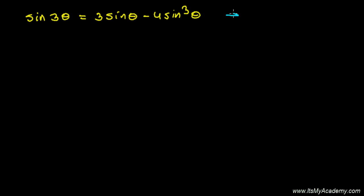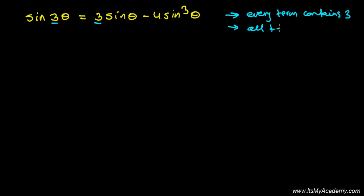A few things to keep in mind: every term contains 3 — always. See here: sine 3 theta equals 3 sine theta minus 4 sine cube theta. Also, all terms contain the same trigonometric ratio. Same trig ratio means here it's sine, here it's also sine, here it's also sine — no cosine or tangent. So if you're writing the sine 3 theta formula, 3 comes first: 3 sine theta minus 4 sine cube theta.